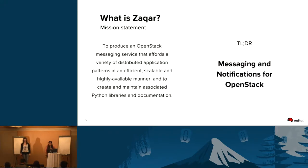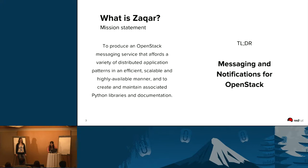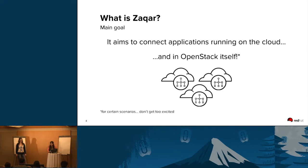So what is SACAR? SACAR is the messaging and notification service for OpenStack. It was built for OpenStack, by OpenStack. On the left you can see the mission statement. To summarize, we want a messaging service that is scalable, highly available, and efficient. SACAR's main goal is to connect applications running on the cloud, and we also want to connect OpenStack projects together.